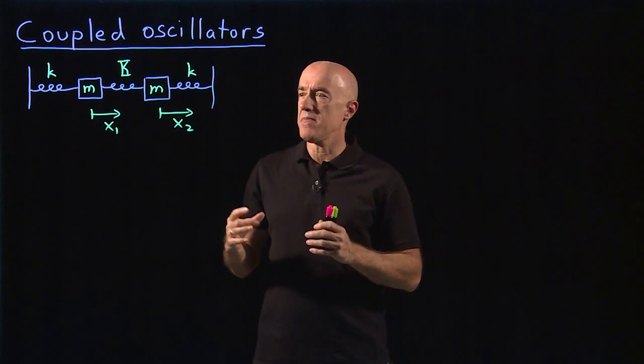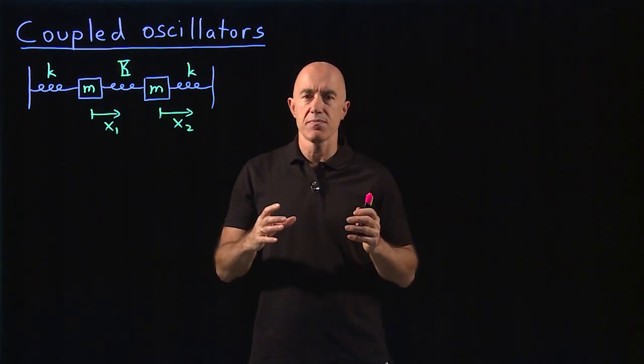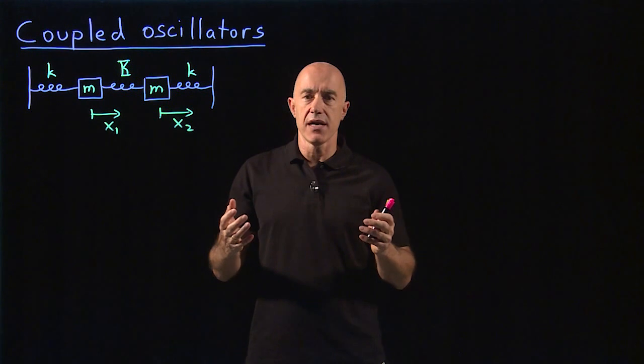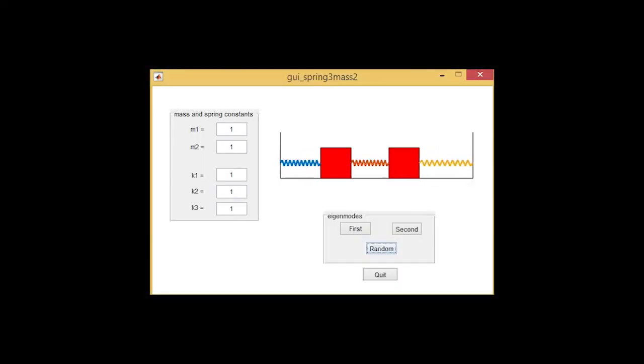So let's begin by looking at a simulation of this problem that I've done on MATLAB. We're looking at the oscillation of two masses with random initial conditions. You see that the masses are moving back and forth. The motion looks random. But in fact, this motion is not random. This motion is actually very simple, but you won't be able to see that unless you solve the mathematics. And that's what I want to do.